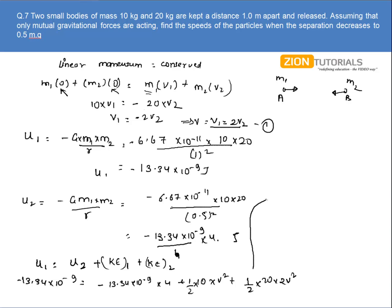So on solving this equation I get the value of velocity as 2.1 into 10 to the power minus 5 meter per second. This is the velocity of V1, and the velocity of V2, that is 20 kg, will be 2 times of it. So it will be 4.2 into 10 to the power minus 5 meter per second. That is our answer.